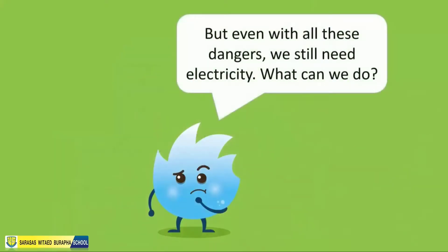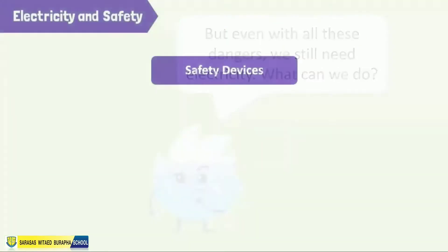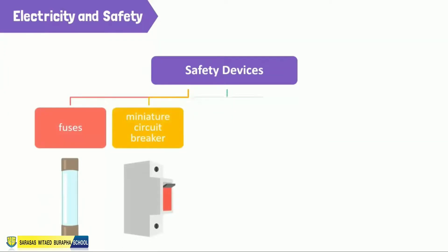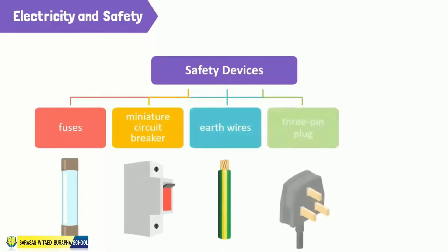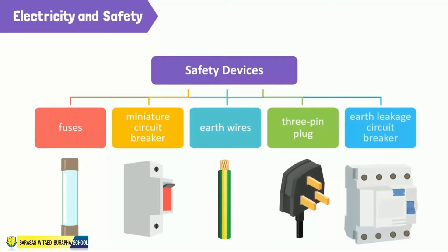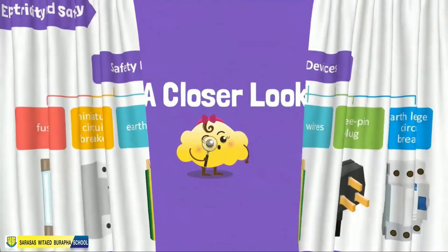Even with all these dangers, we need electricity in our daily lives. To solve this problem, we can use the following devices to ensure safe use of electricity: fuses, miniature circuit breakers (MCBs), earth wires, three-pin plugs, and earth leakage circuit breakers (ELCBs). Let's take a closer look at these devices.